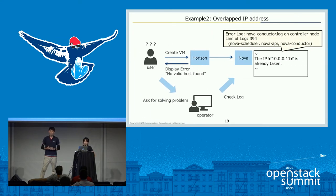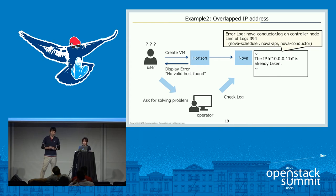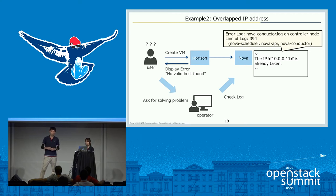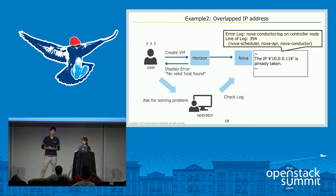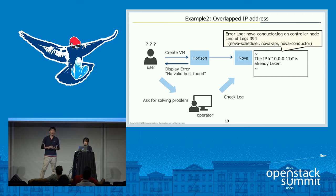Example 2: overlapped IP address. A user tries to create a VM but Horizon displays the error 'No valid host found.' From only this information, the user cannot understand why. The operator checks the log and finds the line 'the IP is already taken,' identifying the overlapped IP address. This error is written in NovaConductor.log, and even when filtered by request ID, the log is 394 lines long — making it take too much time to find the cause.